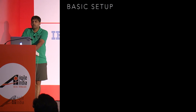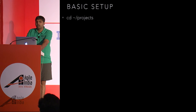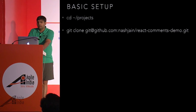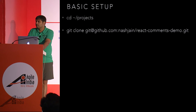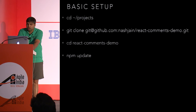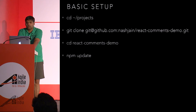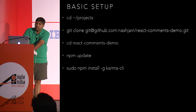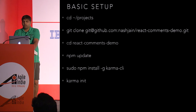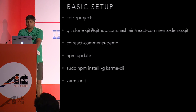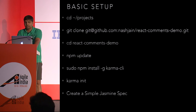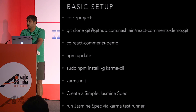If you want to follow along, this project is on GitHub — you can clone the project. I've done these steps already but I'll quickly run through this. You do NPM update once you've got the project cloned. You might need the Karma command-line tool installed, so you do NPM install global Karma CLI. Then we're going to do Karma init, create a Jasmine spec to create our tests, and run from there.